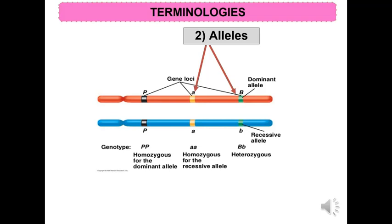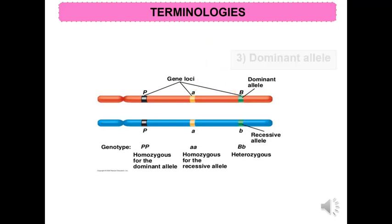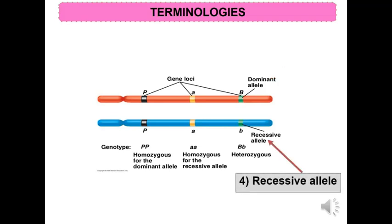A dominant allele is an allele that is fully expressed in the phenotype of a heterozygote. A recessive allele is an allele whose phenotypic effect is not observed in a heterozygote.